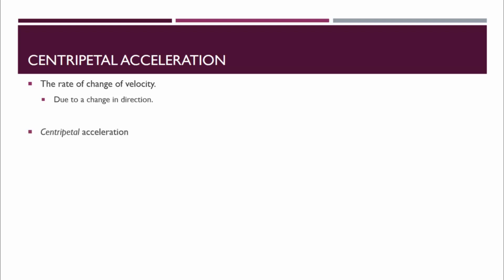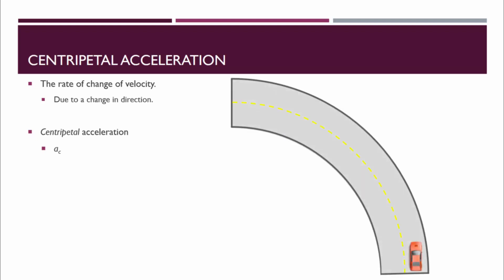This is specifically called centripetal acceleration, which is abbreviated with an a subscript c. Let's take a look at that example again. The car is traveling 15 meters per second, and the track has a radius of 30 meters. Now, whether this is a full circle or not doesn't matter — the part of the track that it's on is circular with a radius of 30 meters.